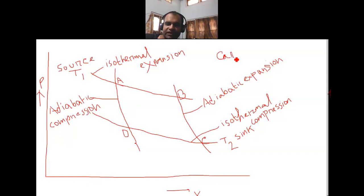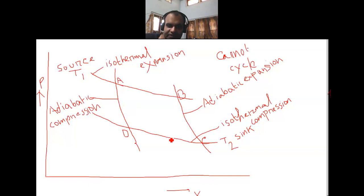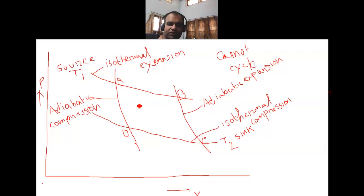From D to A this is adiabatic compression. So, four steps are involved in the Carnot cycle: isothermal expansion, adiabatic expansion, then isothermal compression, adiabatic compression — A→B, B→C, C→D, D→A. Now, what is the work done in the Carnot process? This area enclosed by points A, B, C, D is the area of the P-V graph, which gives us the work done.